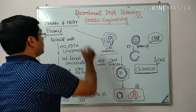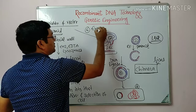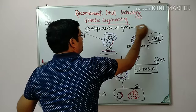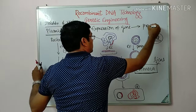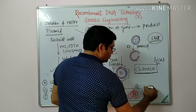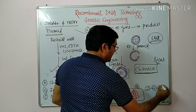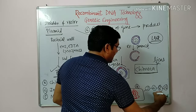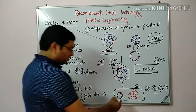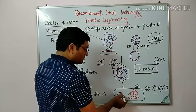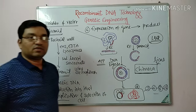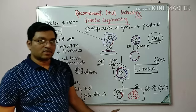The sixth step is expression of gene to produce the desired product. The host cell multiplies — two cells become four, four become eight, eight become sixteen, and so on. After that, the desired piece of gene produces a desired protein through transcription and translation.